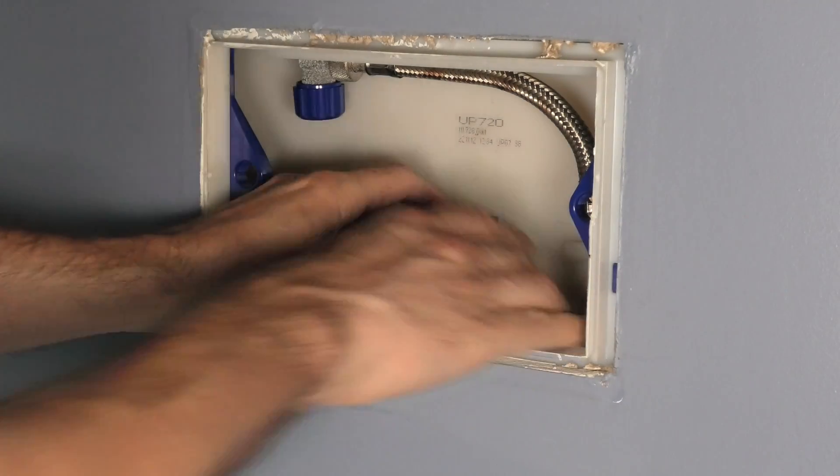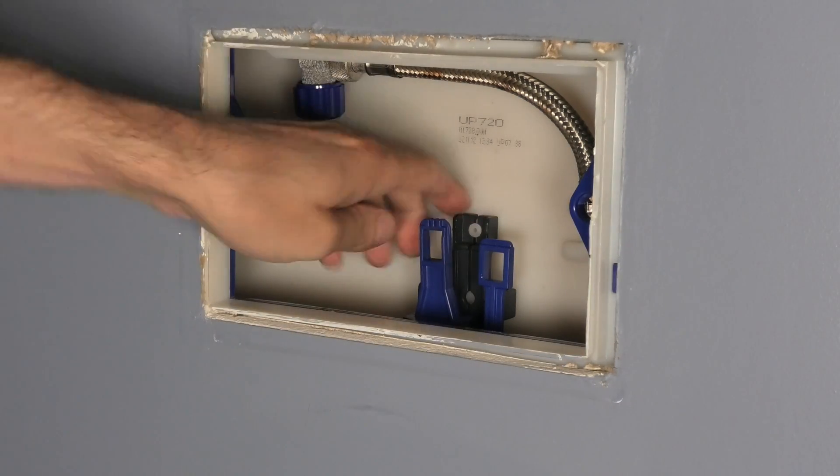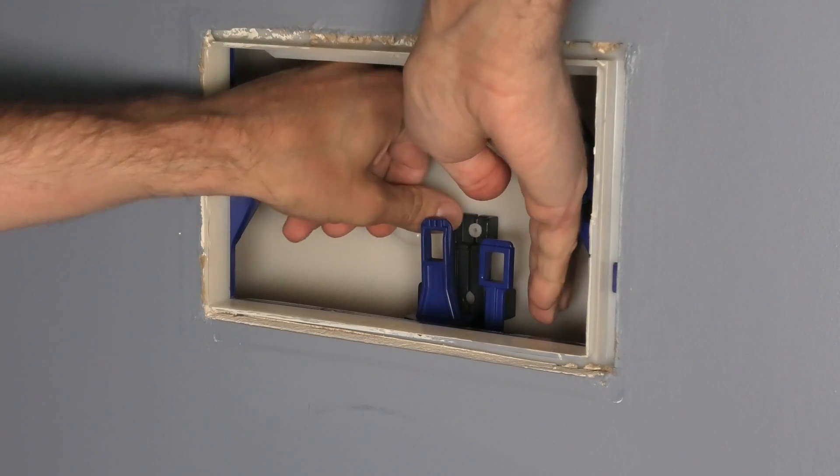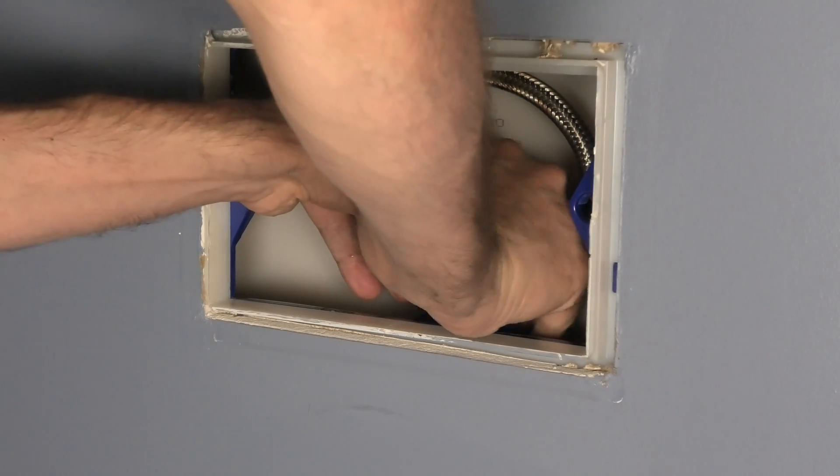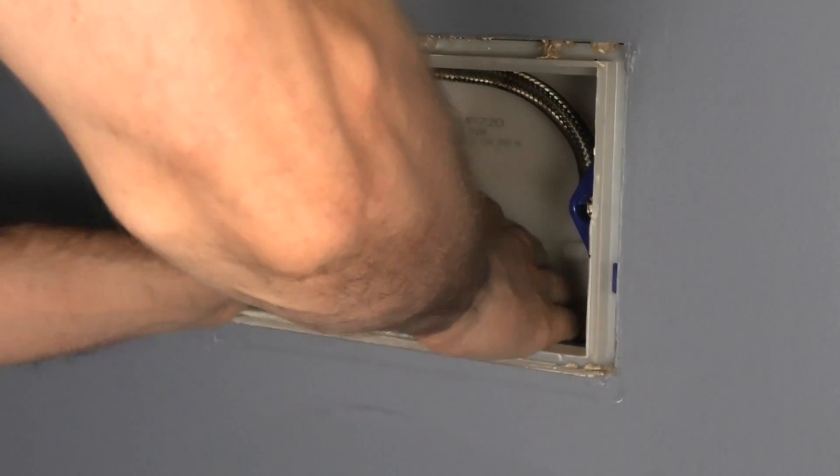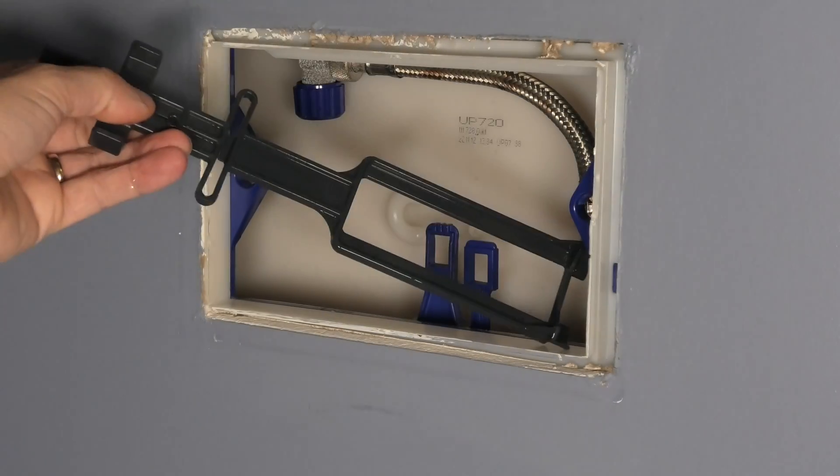And now in the background we have here this grey bracket that is not part of all models. So you may not actually have this, but in this case I have to remove this. You can kind of spread the top apart and then just take this out.